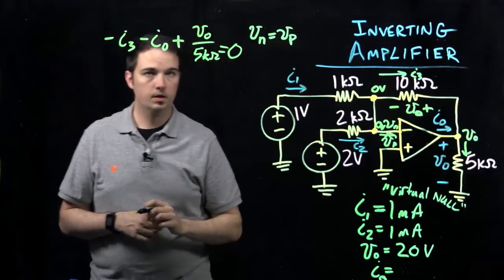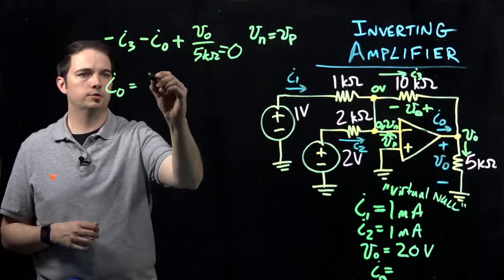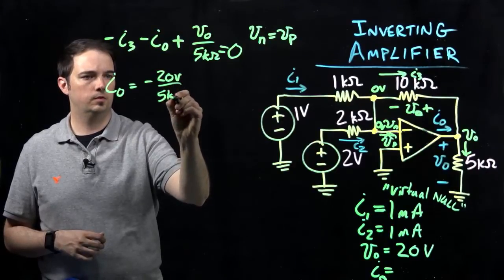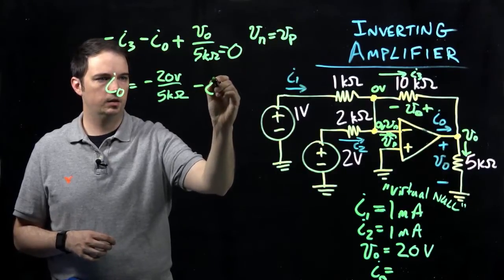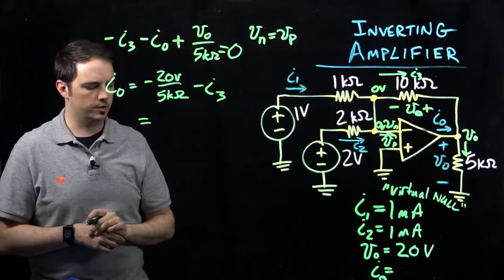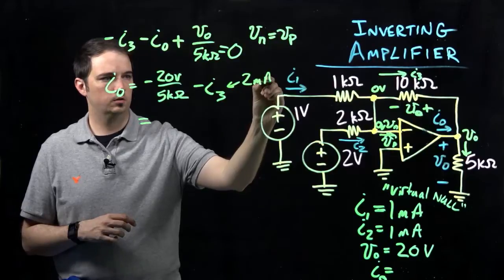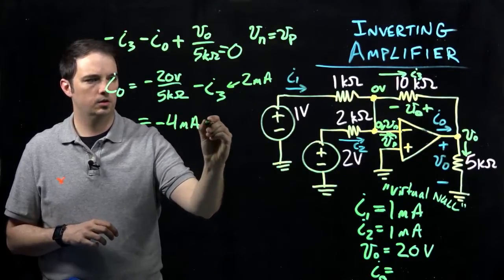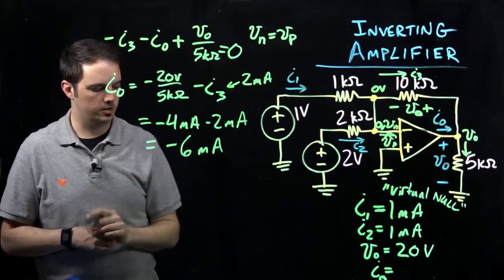Solving for I0, we have I0 equals V0, which is negative 20 volts, over five kiloohms, minus my I3 current. I3 was two milliamps. So 20 volts over five kiloohms would be negative four milliamps minus two milliamps, giving me a total current of negative six milliamps.